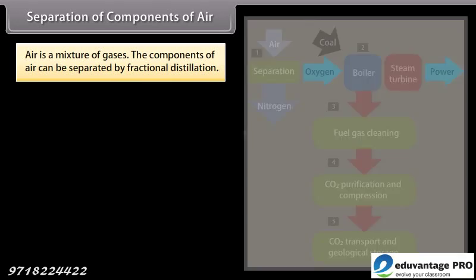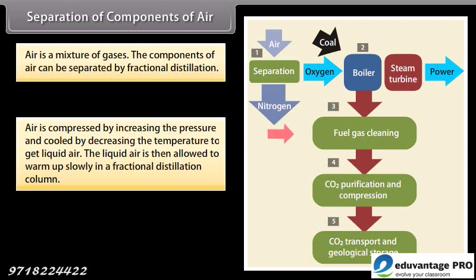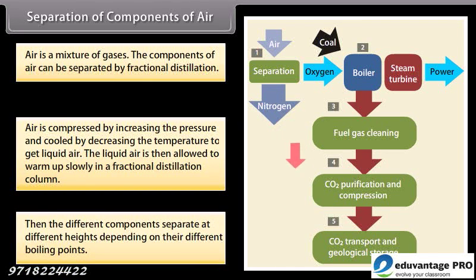Separation of components of air: Air is a mixture of gases. The components of air can be separated by fractional distillation. Air is compressed by increasing the pressure and cooled by decreasing the temperature to get liquid air. The liquid air is then allowed to warm up slowly in a fractional distillation column. Then the different components separate at different heights, depending on their different boiling points.